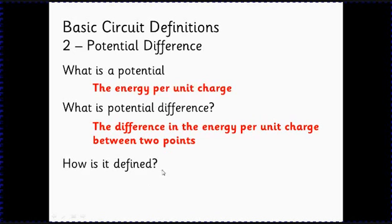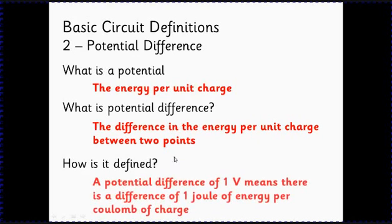So the definition - hopefully getting the idea now we're talking about energy per unit charge. So the definition is that one volt - volts are the units of potential difference. We quite often will be a bit lazy and call that voltage, but really we should call it potential difference.